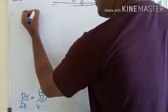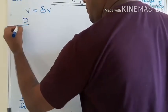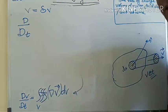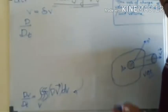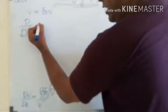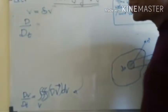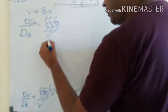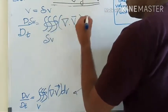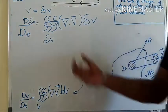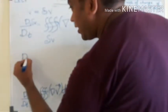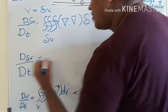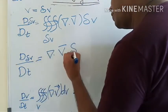We replace the volume by a very small volume delta V, so it becomes d/dt of delta V. This is the substantial derivative, also called the material derivative, because the fluid particle is moving following a Lagrangian approach. So here we have delta V on one side and Del dot V on the other side. For a very small volume, the integral reduces, and what we get is: d(delta V)/dt equals Del dot V times delta V.